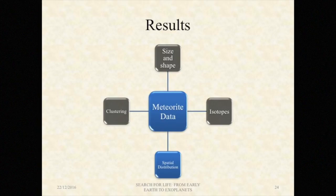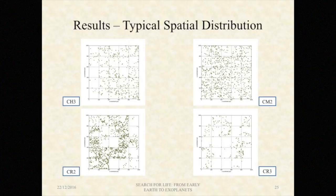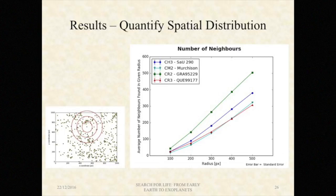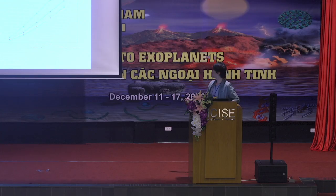In terms of spatial distribution, we are looking at a total of 25 single images — five images in X and Y directions. Carbon inclusions in the CM chondrite are uniformly spread, whereas those in the CR2 chondrite are cluttered in a small region. To quantify that, one way is by counting how many neighbors each inclusion sees within a given radius. In this plot, up to 500 pixels, CR2 chondrite shows the steepest gradient, and the uniformly spread CM2 chondrite sees a flatter gradient. The error bar is so small it is not visible.